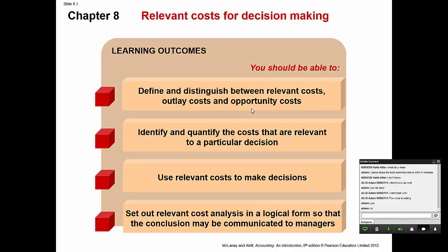In this chapter, which is chapter 8, we will take the following items. The first one will distinguish between relevant costs, outlay costs, and opportunity costs. Next we will identify and quantify the costs that are relevant to a particular decision. Next we will use relevant costs to make some financial decisions, and finally we will set out the relevant cost analysis in a logical form so that the conclusion may be communicated to members.